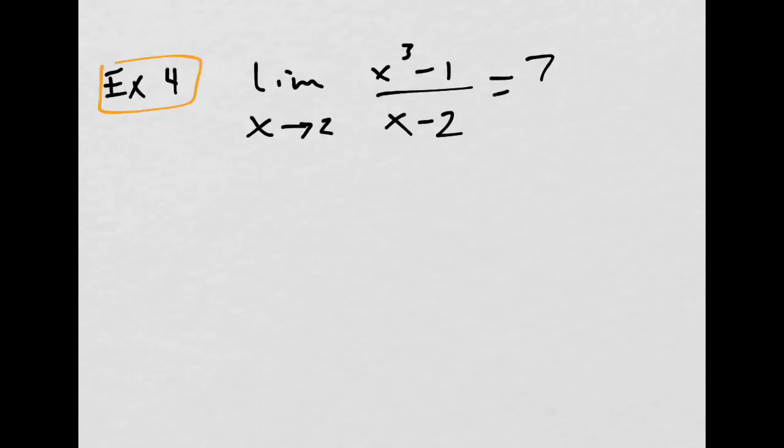Now, for this function, x cubed minus 1 over x minus 2, if we try to use direct substitution, we can see that we get a 0 in the denominator. We don't get it in the top, but we do get a 0 in the bottom.